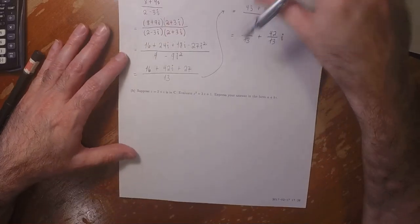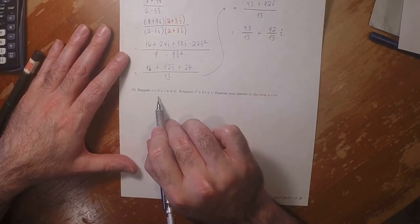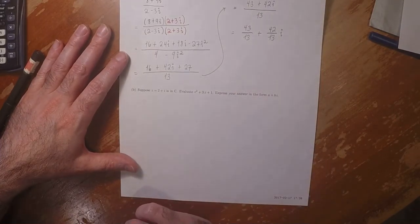For part b, suppose z is this complex value. Evaluate that expression.